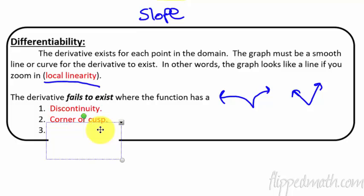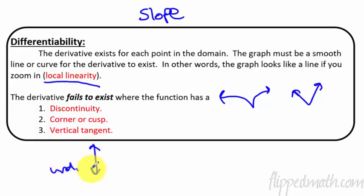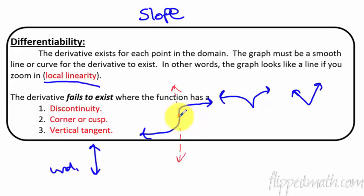The last one, which is a little bit harder to visualize, is called a vertical tangent. In Algebra 1, if you remember, a vertical line has no slope — the slope is undefined on vertical lines. So if you have some type of graph like a cube root, where the graph does something like this, and just for that split moment right there the slope is straight up and down — if you were to draw a tangent line there, you'd have a vertical line. If you have a vertical tangent line, then the derivative does not exist right there at that point.